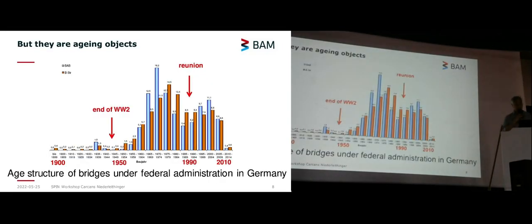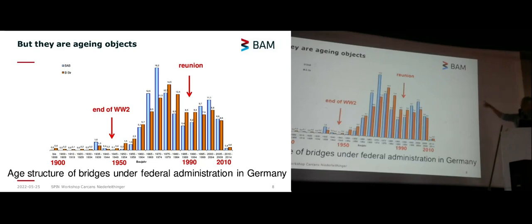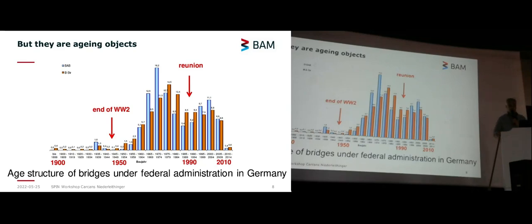These structures — these iconic bridges — most of them are getting of age. That's the age structure of bridges under federal administration in Germany. You see there's almost nothing left from before the Second World War, there's a boom in the 1960s and 70s, a drop in the 80s, and then a second boom after German reunification in the 1990s and 2000s. So most of our railway and road bridges are now 50, 60, 70 years old, and of course there are aging effects, even if they are in most cases designed for around 100 years.